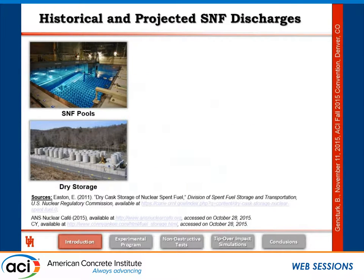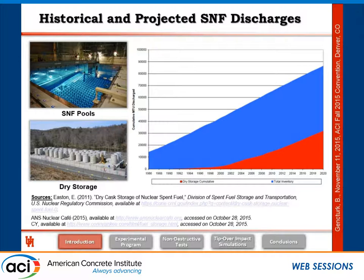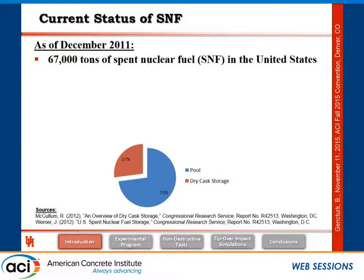These are the two types of storage that may happen at power plants. One is spent nuclear fuel pools — immediately after extraction from the reactor, the fuel is placed in pools to cool down. After one to five years, they are transferred into dry storage casks. This chart shows cumulative metric tons of spent nuclear fuel versus time. Initially all fuel was stored in pools, but as pools filled, they began moving fuel into dry storage casks, and dry storage will continue to increase over time.